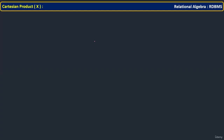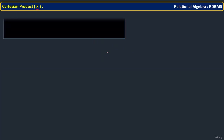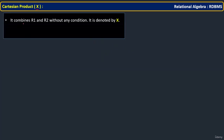Now let us see the next operator: Cartesian product, represented with the cross mark. What is this? It is very simple. The Cartesian product takes two relations R1 and R2 and combines them with all possible combinations.